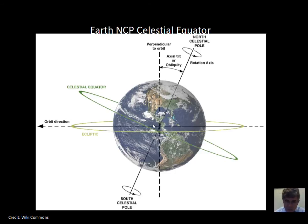Imagine the plane of the Earth's orbit being a tabletop. Instead of the polar axis being straight up and down relative to that tabletop, the polar axis is tilted over 23.5 degrees. This creates the seasons on the Earth.